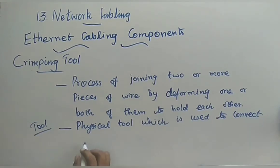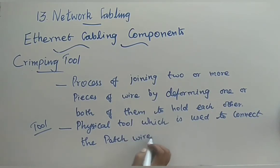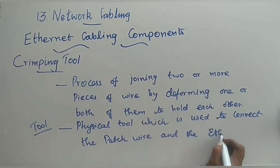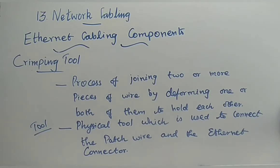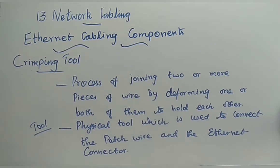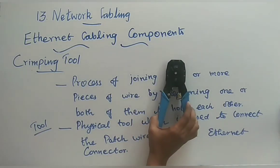The crimping tool is a physical tool which is used to connect the patch wire and the ethernet connector — the RJ45 connector. It takes the cable and the connector and fits them correctly together inside.